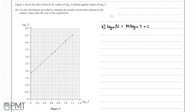For part b, we're given a graph showing the line of best fit for values of log₁₀(n) plotted against log₁₀(t). We're asked to estimate the number of microbes present three days after the experiment starts. The end goal is a value of n using n equals a·t to the power of b, so we need to find a and b by reading information off the graph.